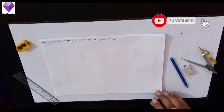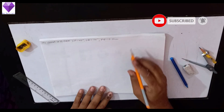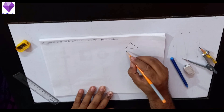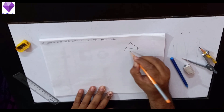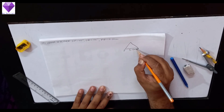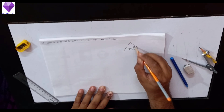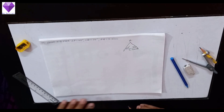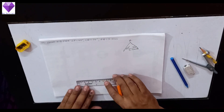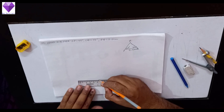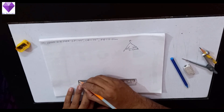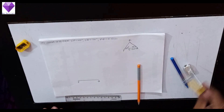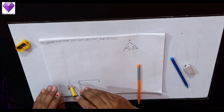Hello students, today we are going to construct triangle PQR where angle P and angle Q are given, and PQ is given. PQ is 5.5 cm, angle Q is 75 degrees, angle P is 45 degrees. To construct that, first of all I will make a 5.5 cm base, that will be PQ. On that I have to draw 45 degrees and 75 degrees.